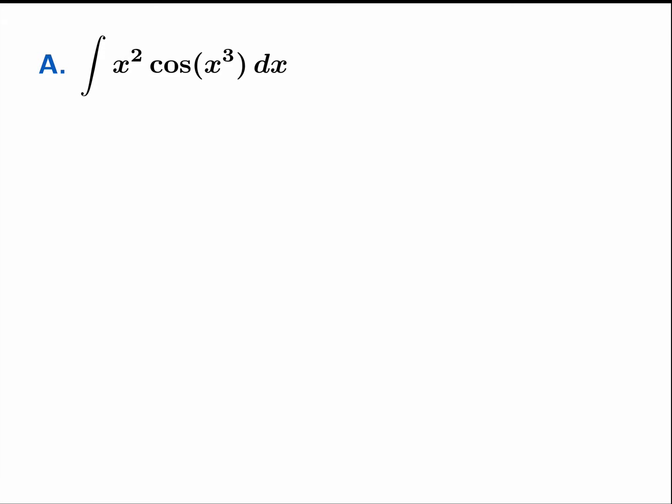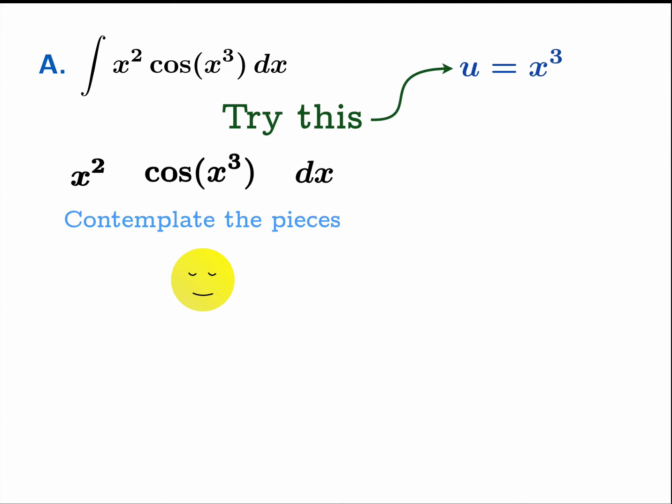Our first example is this product of x squared and cosine of x cubed. We're going to find the indefinite integral of this function. The first thing we're going to do is just contemplate the pieces. The more of these you do, the more you should just sort of take a look at the pieces, and usually a substitution calls out to you. In this case we're going to try u equals x cubed.